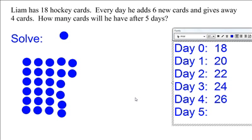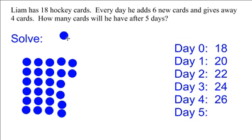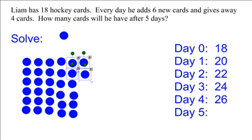All together: six, twelve, eighteen, twenty-four, twenty-five, twenty-six. So my next number will probably be twenty-eight, but let's use our model to find out for sure. One, two, three, four, five, six. And take away four. All together: six, twelve, eighteen, twenty-four, twenty-five, twenty-six, twenty-seven, twenty-eight.